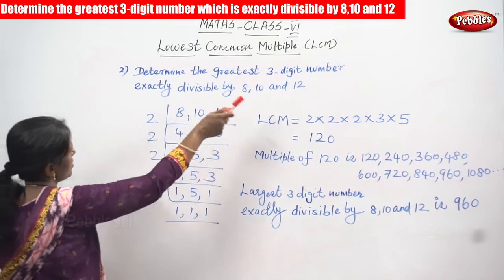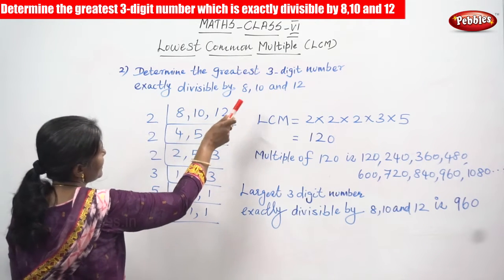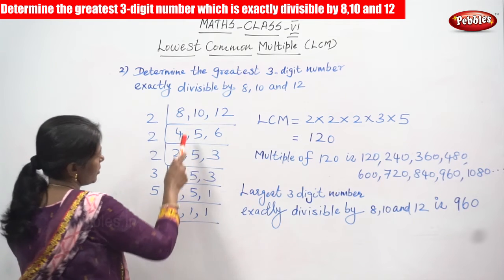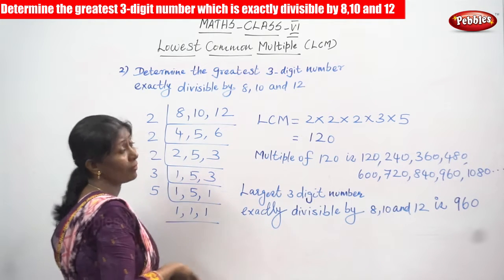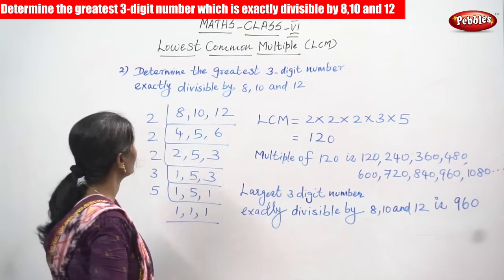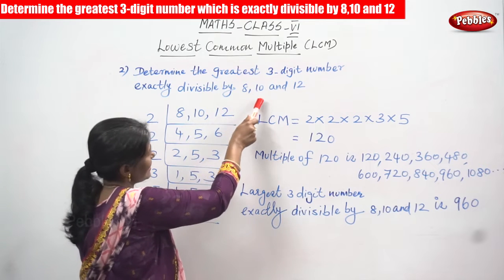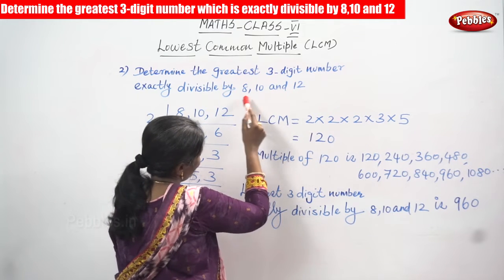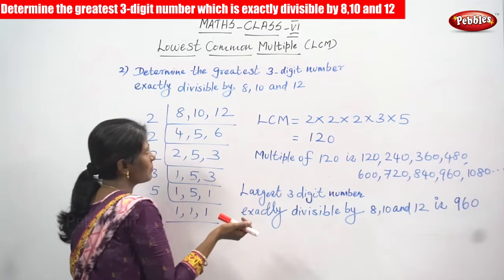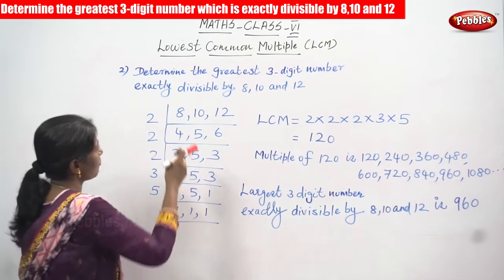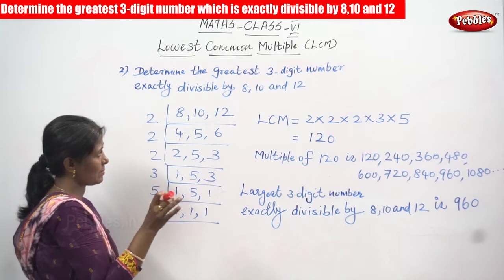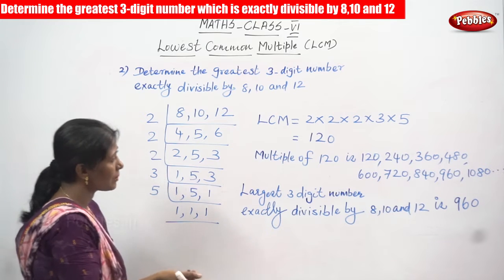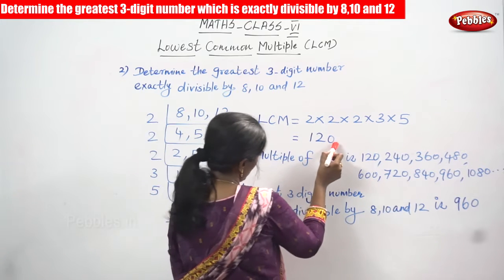We are going to determine the greatest three-digit number exactly divisible by 8, 10, and 12. To solve this, we are going to take the LCM of 8, 10, and 12. We have taken more than two numbers — that is three numbers. We have to find the LCM, that is the lowest common multiple, first.